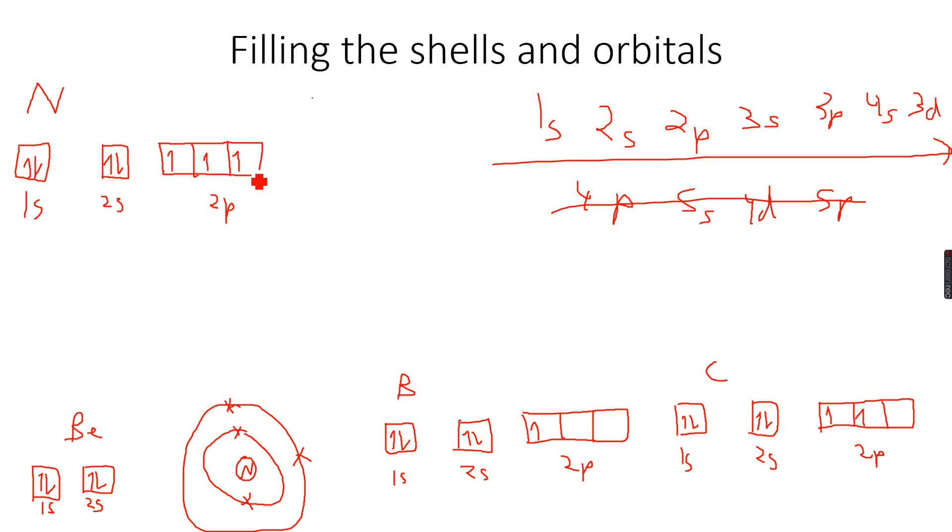In nitrogen, all the 2p orbitals have been filled. Now when we come to oxygen, which has 8 electrons, we have 1s, 2s, 2p. We'll fill two here first, then two here. Now one, two, and three—this was nitrogen, but we have the eighth electron.